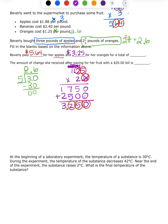Then it says: what was the total? Total means we're going to add apples and oranges together. The cost of apples was $5.64 and the cost of oranges was $3.25. I stack my decimals and make sure they line up, then add: five plus four is nine, six plus two is eight, bring down the decimal, five plus three is eight. The total cost is $8.89.